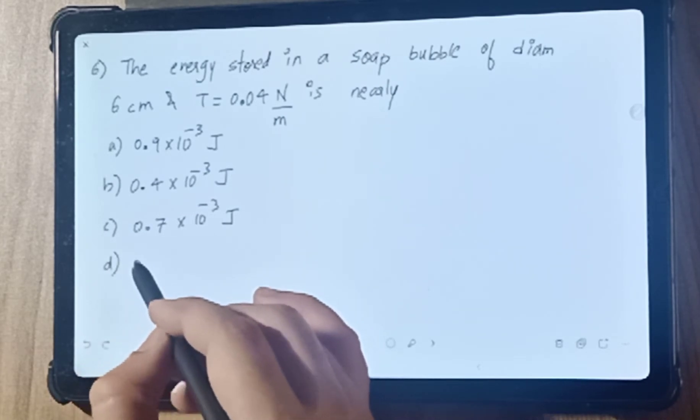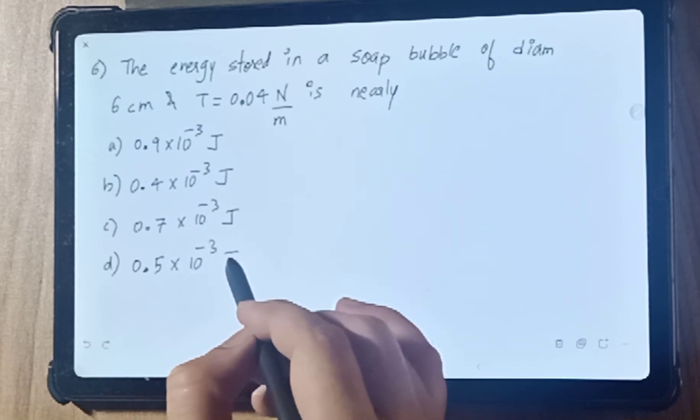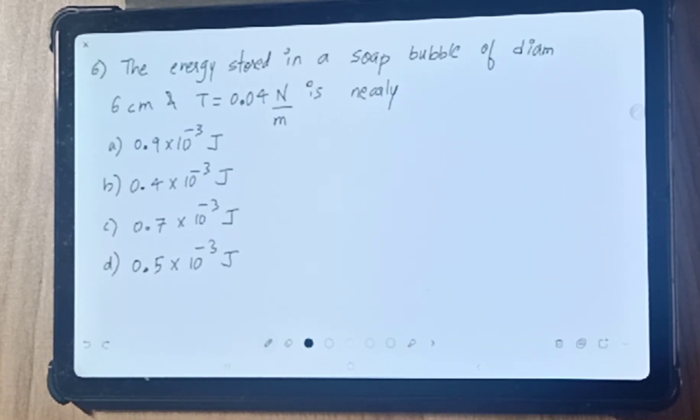Option D: 0.5 × 10⁻³ joule. Is that fine? Tell me.